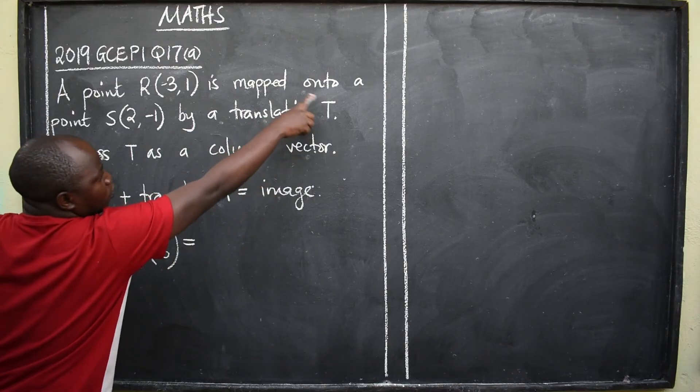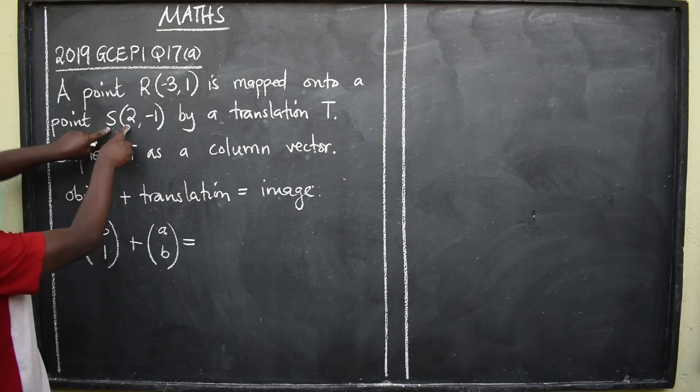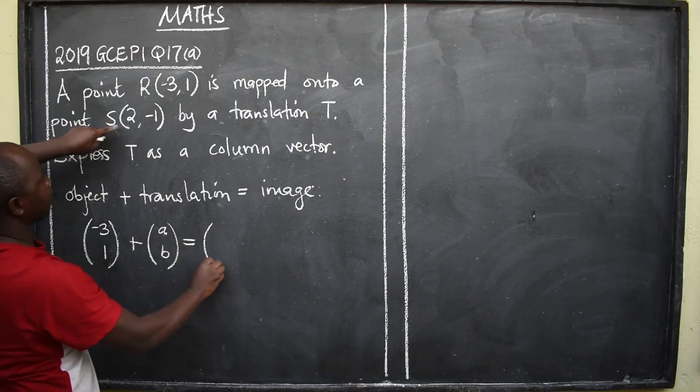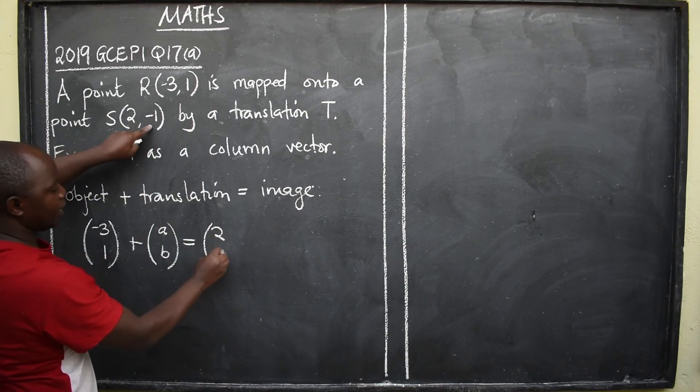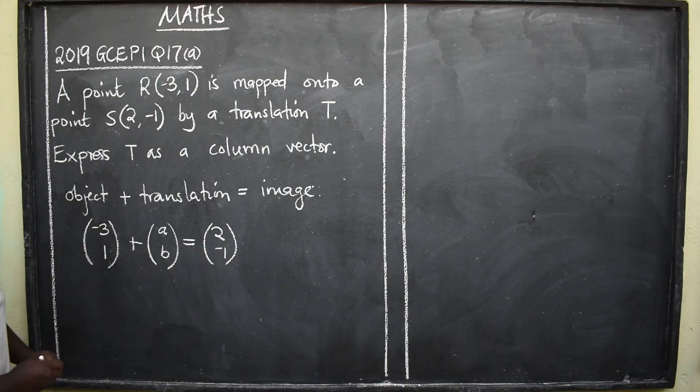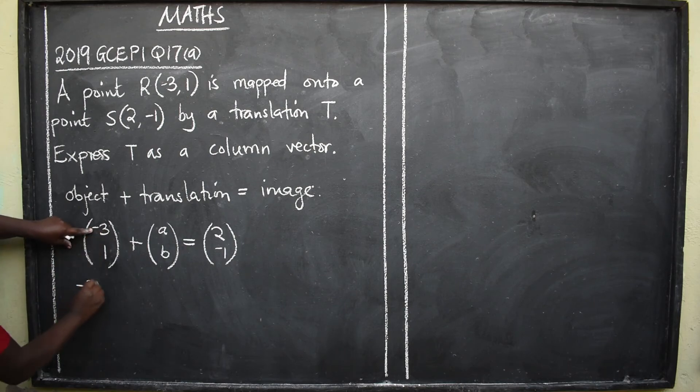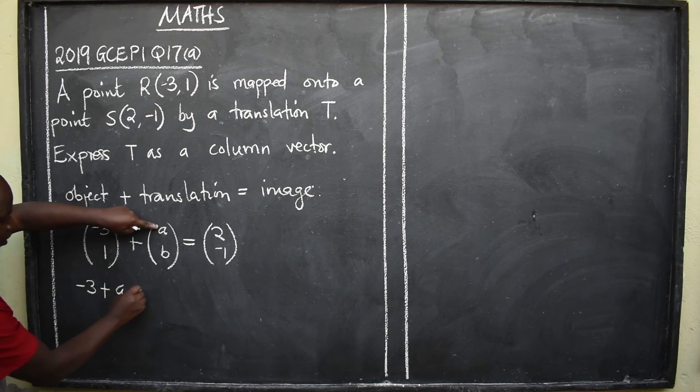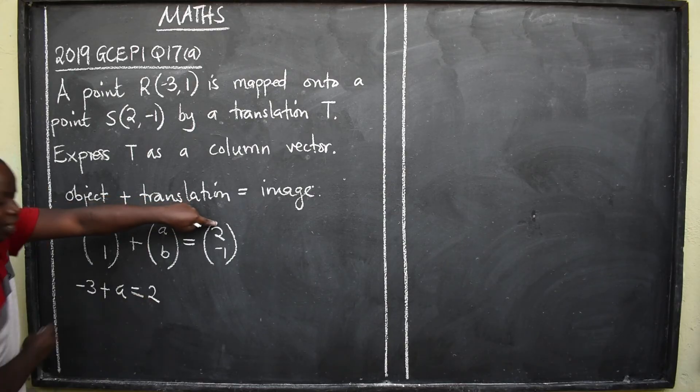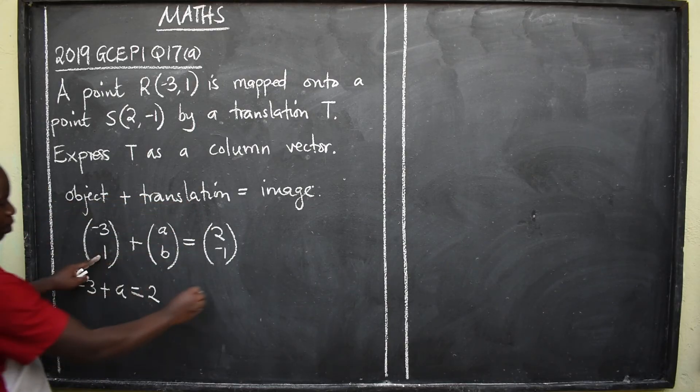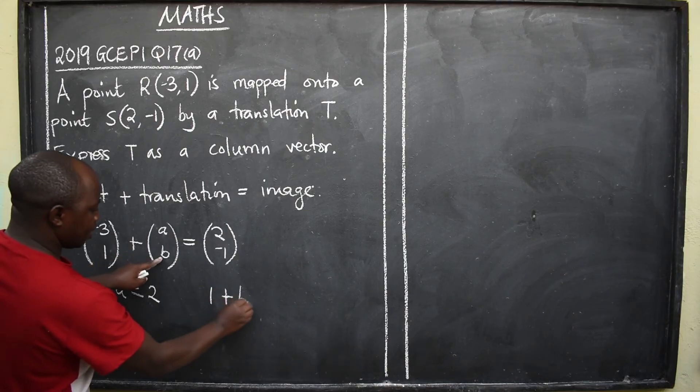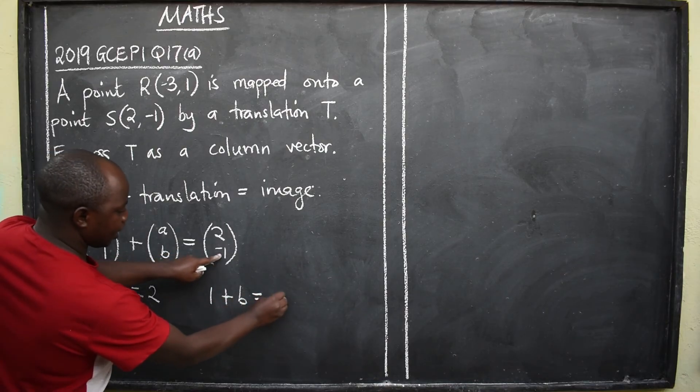Equals image onto a point S. This is now the image, which is 2 to negative 1. Like that. Then solve A and B. That will be your translation. So here, we are going to make equations. Negative 3 here plus A is equal to 2. That will be the first one. The second one will be 1 plus B. This should give us negative 1.